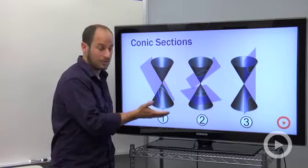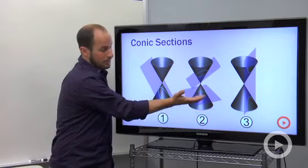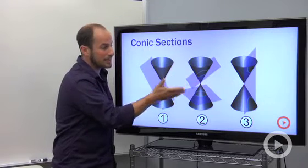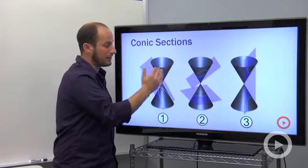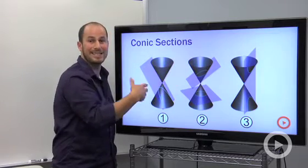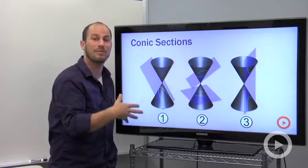If you take the plane parallel to the base of the cone, you end up with a perfect circle. If you take this plane that is not parallel to the side or the bottom and it crosses through a cone, what you end up with is an ellipse, which is a fancy word for an oval.